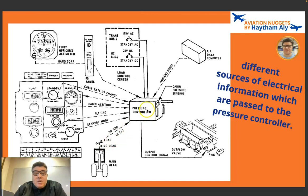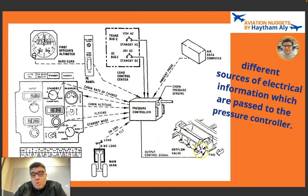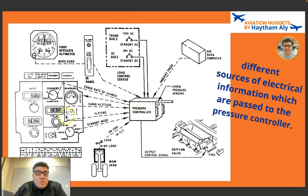Flight/ground information comes from the landing gear computer or landing gear proximity sensors, indicating to the pressure controller whether the aircraft is on the ground or in flight. In auto mode, the pressure controller opens and closes the outflow valve automatically: CBC1 with motor one (auto one) and CBC2 with motor two (auto two). A third motor is provided for manual control, in case both cabin pressure controllers fail, allowing the pilot to control cabin altitude manually from the pressurization panel.